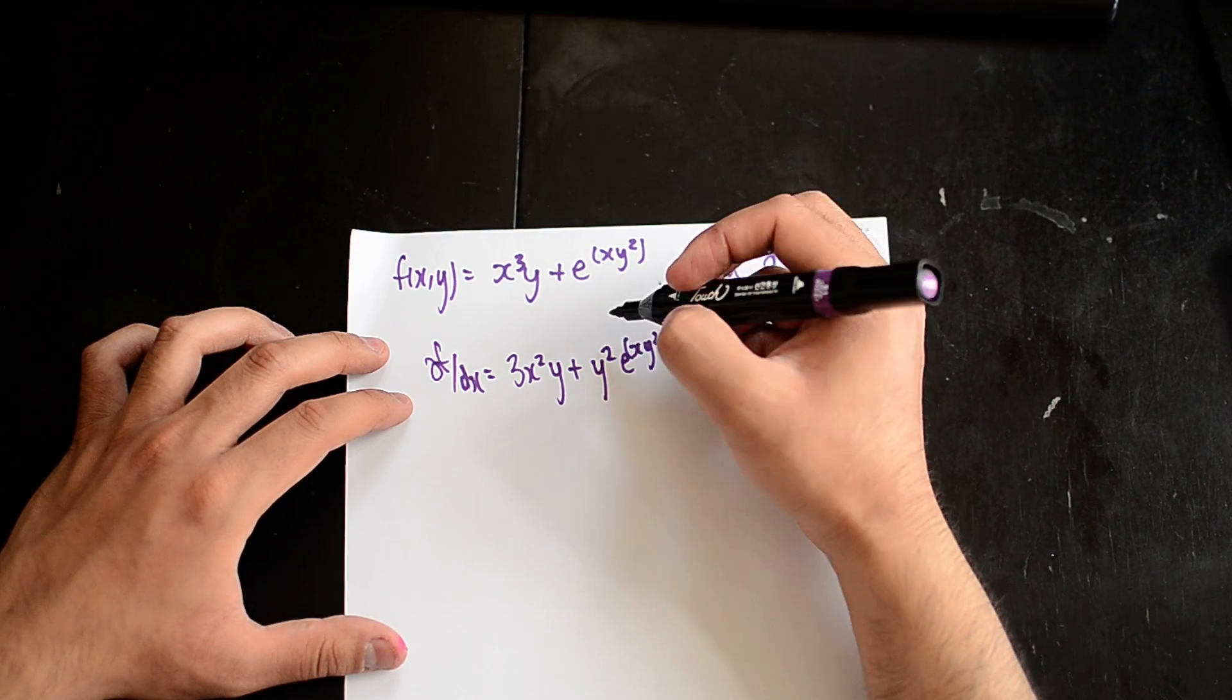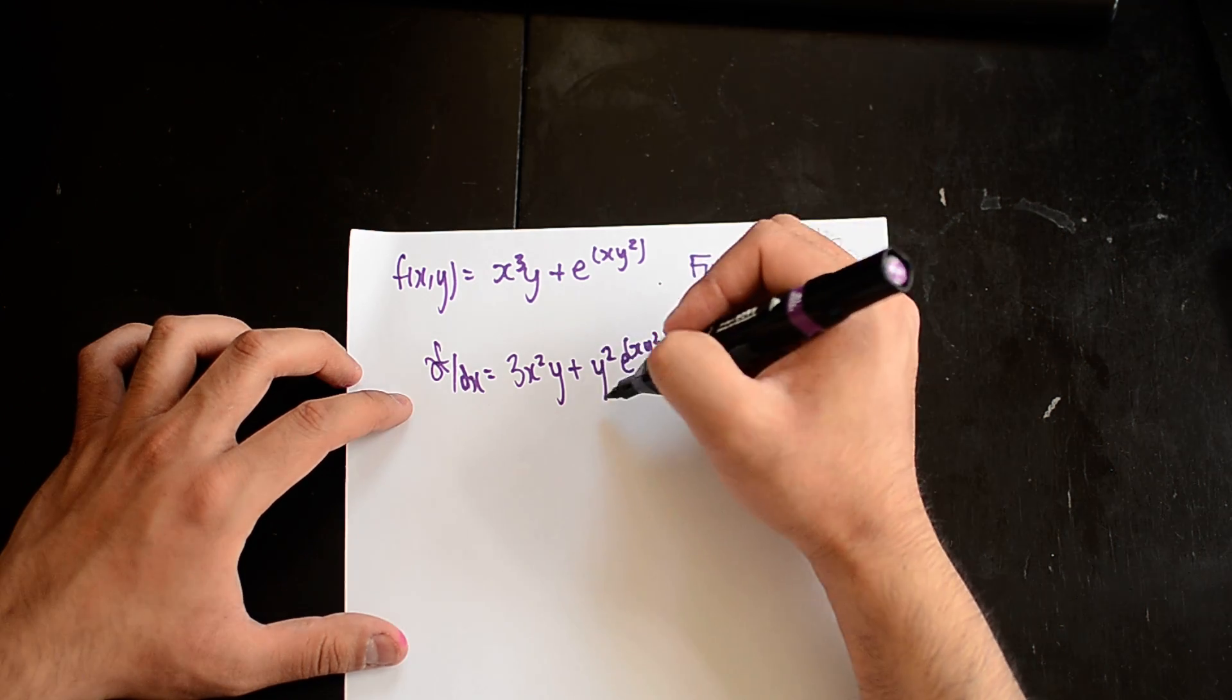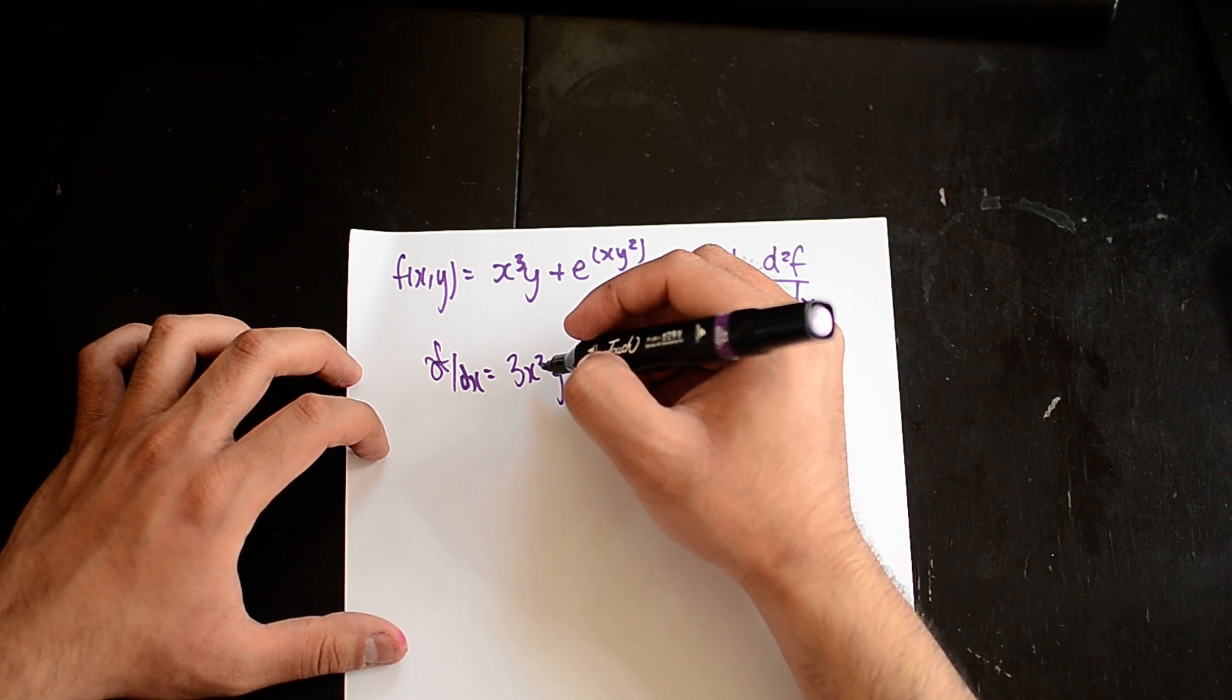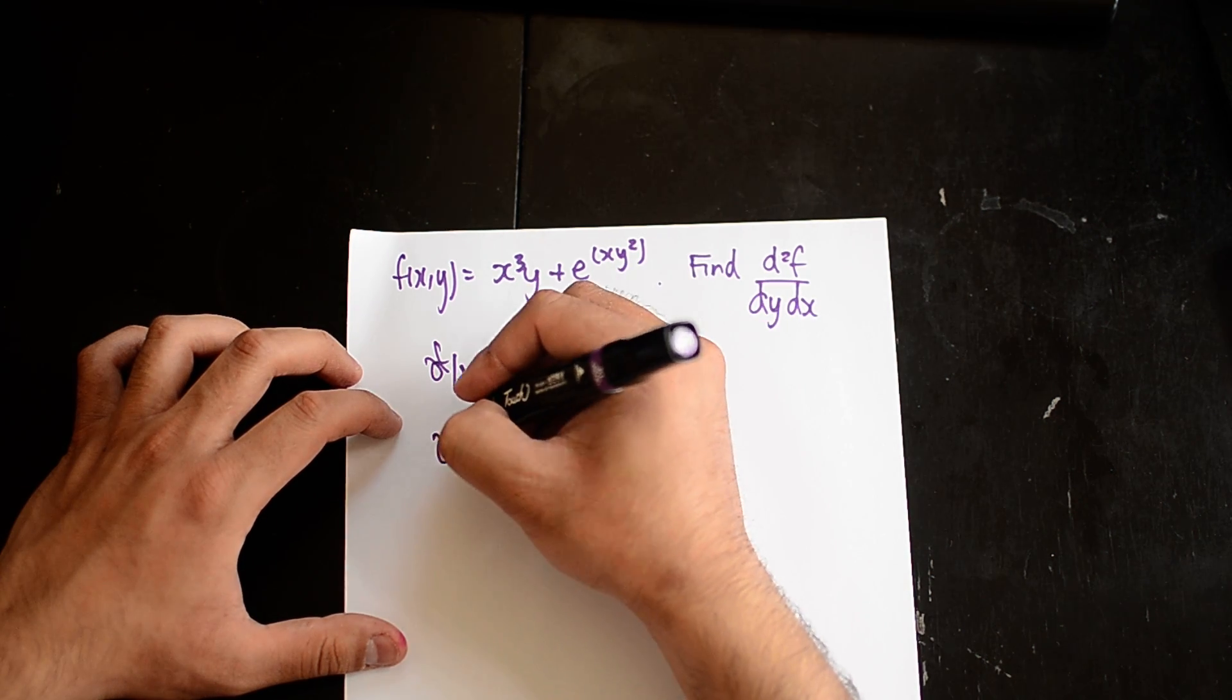But as you can see, we have a y term here and a y term here, so I'm going to have to use the product rule on this part here. Let me just start doing it.